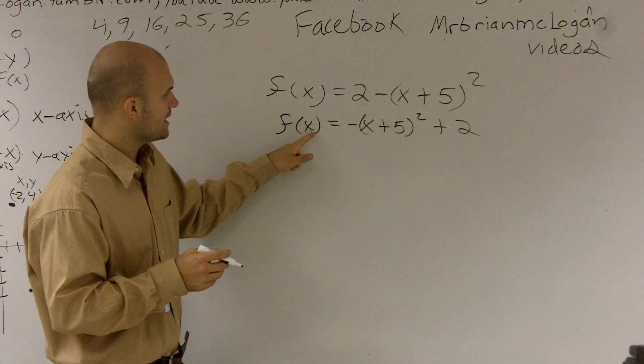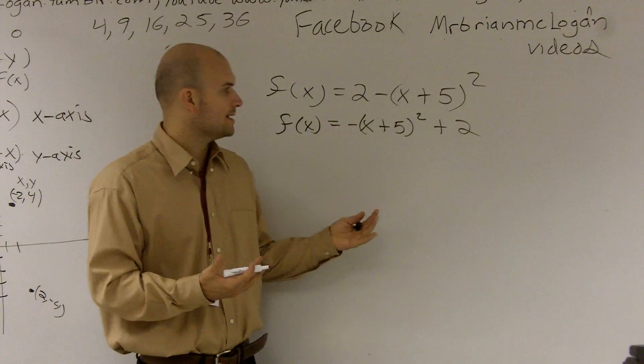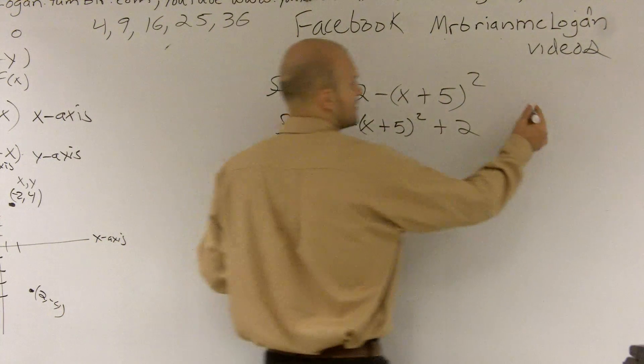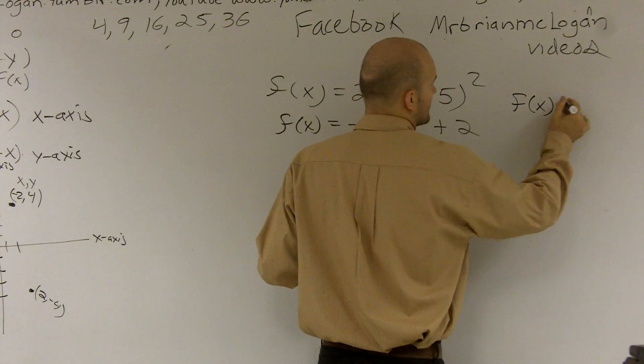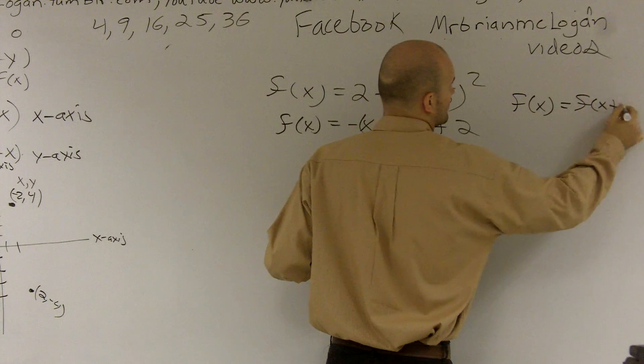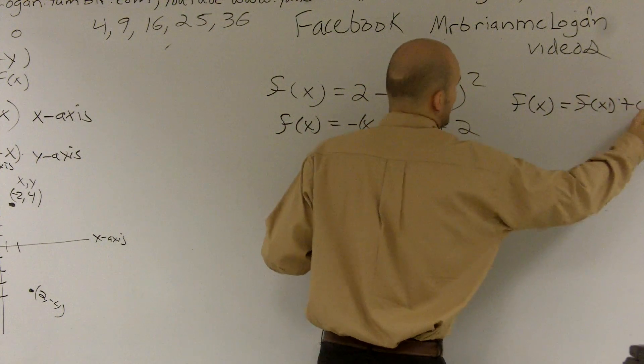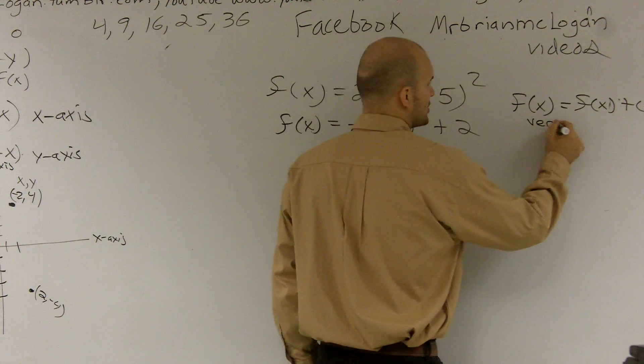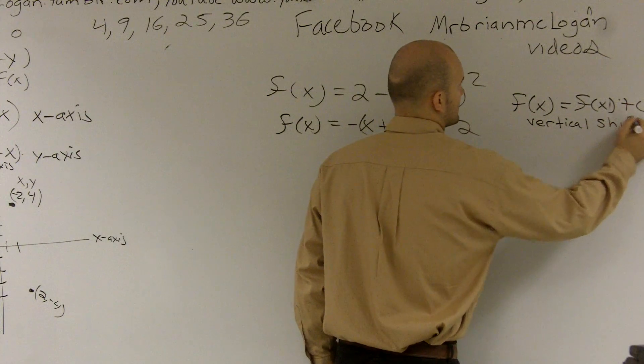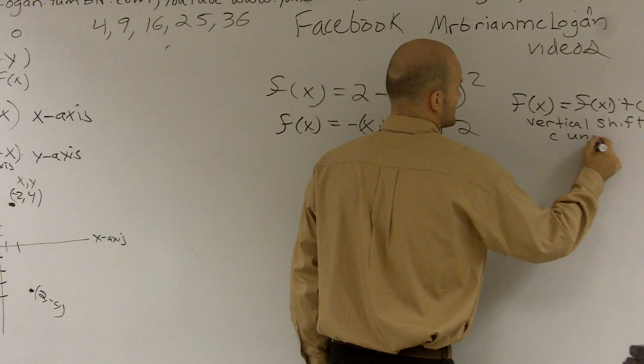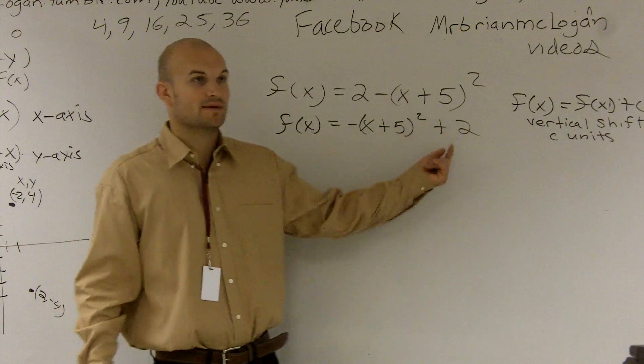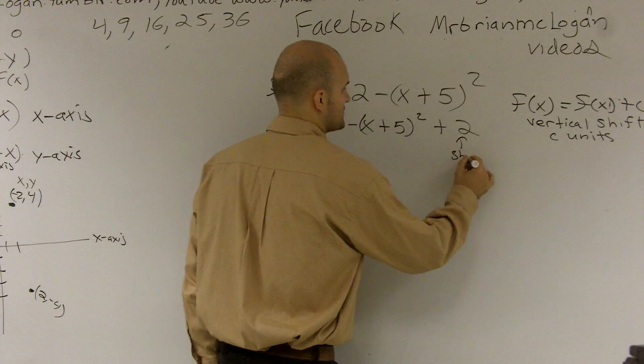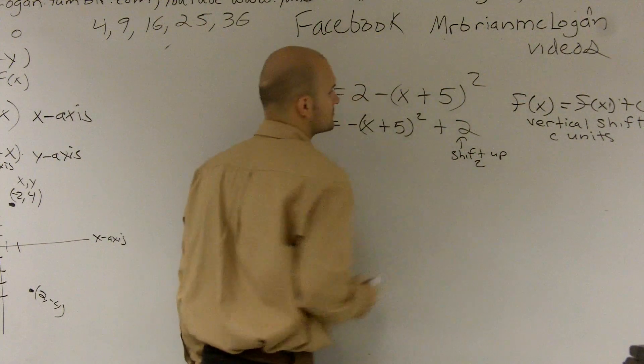So when we're looking at a problem like this, the first thing we're going to do is let's determine what each number is doing. So if I look at this 2, and if I remember, if I have f(x) = f(x) + c, what that told us from our notes was we were going to have a vertical shift c units. So what that's telling me is I'm actually going to shift my whole graph up 2 because it's positive. So I'll just write shift up 2.